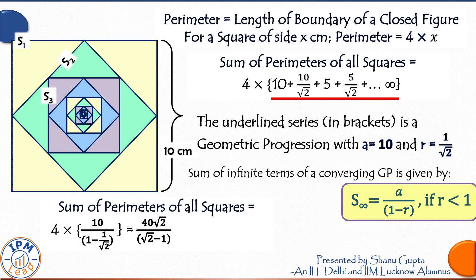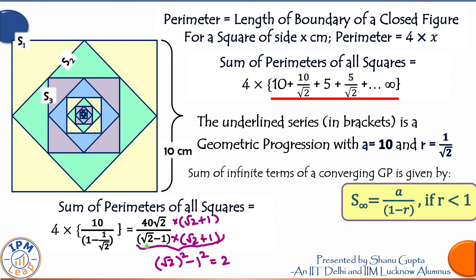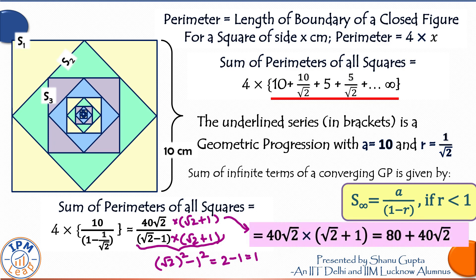This we can see is a surd and to simplify it, we must rationalize the denominator. Multiply numerator and denominator by the conjugate of this, which is under root of 2 plus 1. So we get the final expression equal to 80 plus 40 root 2 and that's our answer.